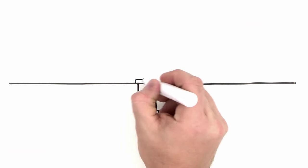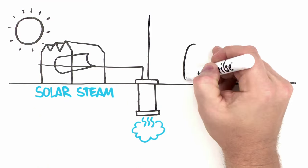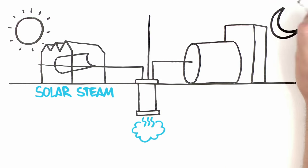To maintain steam injection around the clock, solar steam is injected during the day, and steam produced by burning natural gas is injected at night.